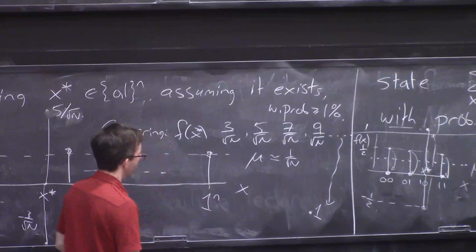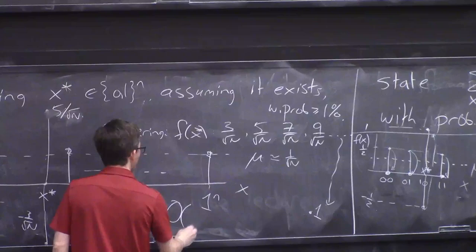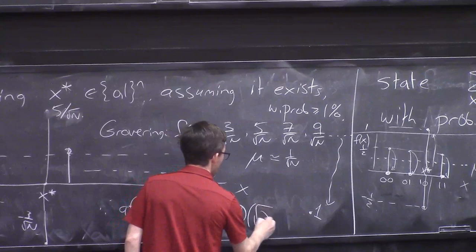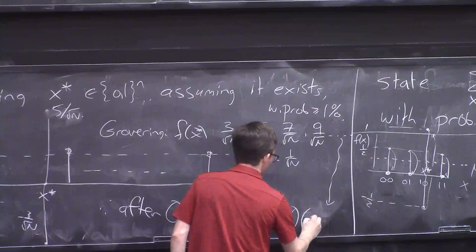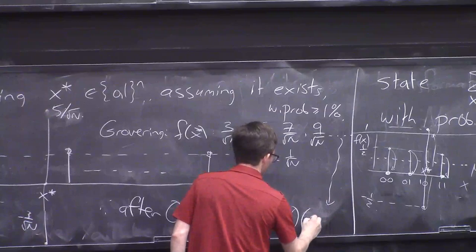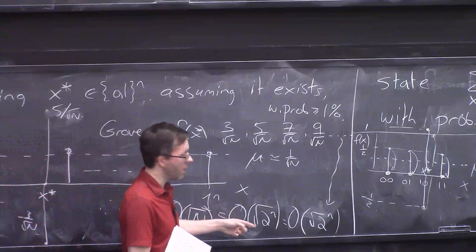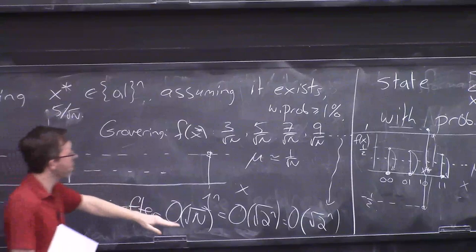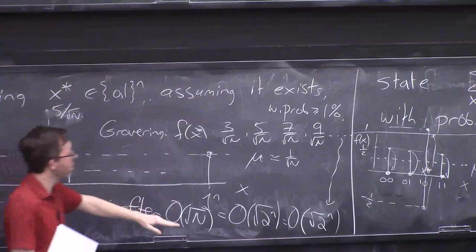How many times do we have to do this to get the amplitude up to 0.1? Something like root N divided by 0.1 times, so after order root N — which is order root(2 to the little n), which equals root(2 to the n) — after this many steps the amplitude gets up to a constant. We measure and learn x-star with about 1% chance. This gives Grover's algorithm running in root(2 to the n) times poly n time.